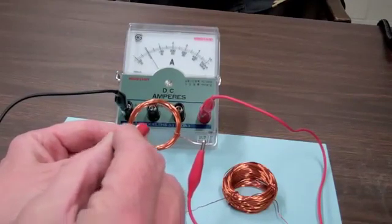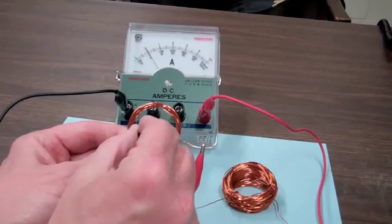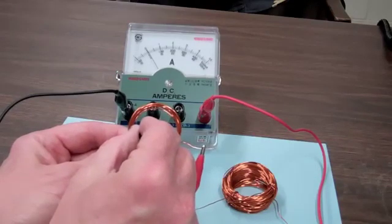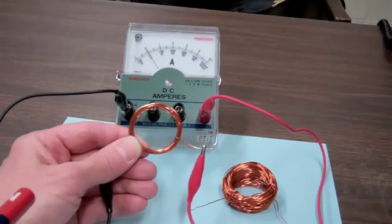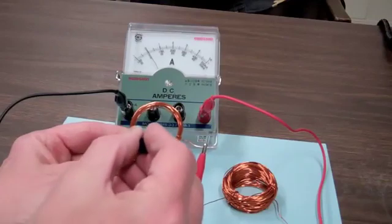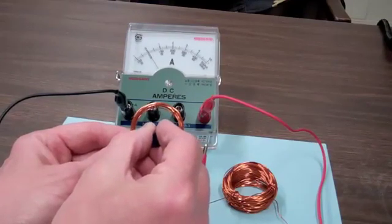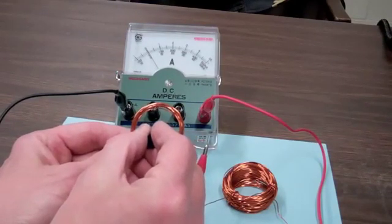Also, as the magnet is going in, the needle deflects to the right, and as I pull the magnet out, it deflects to the left. But when the magnet isn't moving, there is no deflection, indicating no current flowing.